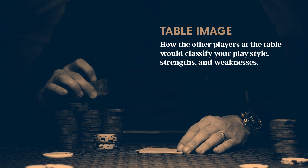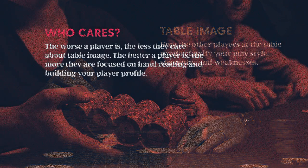To get started, let's define what table image is. Table image is really how the other players at the table would classify your play style, your strengths, and your weaknesses. So if you're playing against other players that are thinking, it's very important to understand what they think of you. Just like you're constantly thinking of them and adjusting to that information, other players are doing the same thing to you.